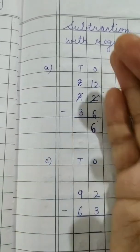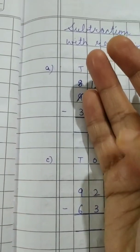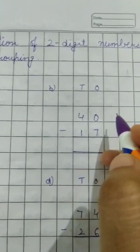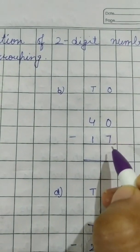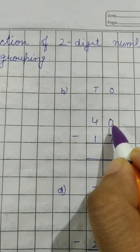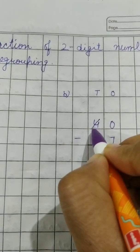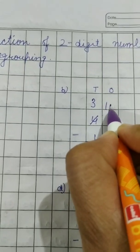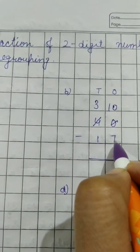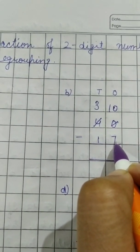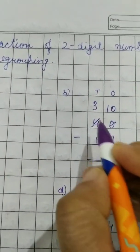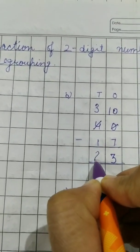Now 8 minus 3. 4, 5, 6, 7, 8. 8 minus 3, 5. Now B part. Here it is 0 and 7. Not possible. So it will borrow from 4. This will become 3 and 0 will become 10. Now 7 here. So we will start with 8. 8, 9, 10. 3. Now 3 minus 1, 2.